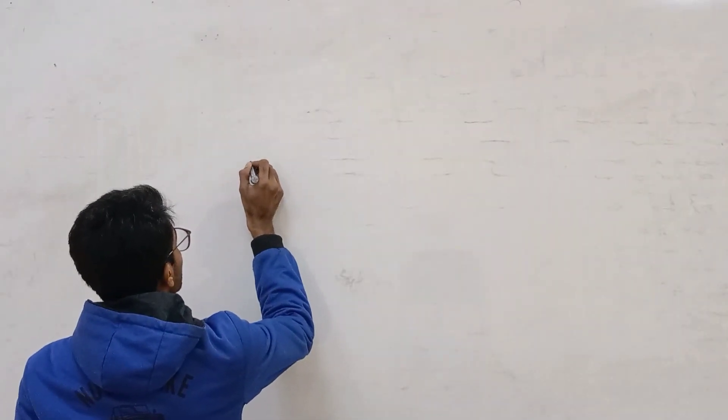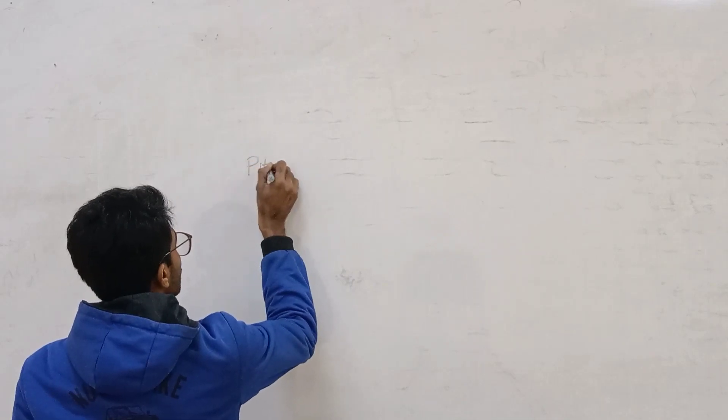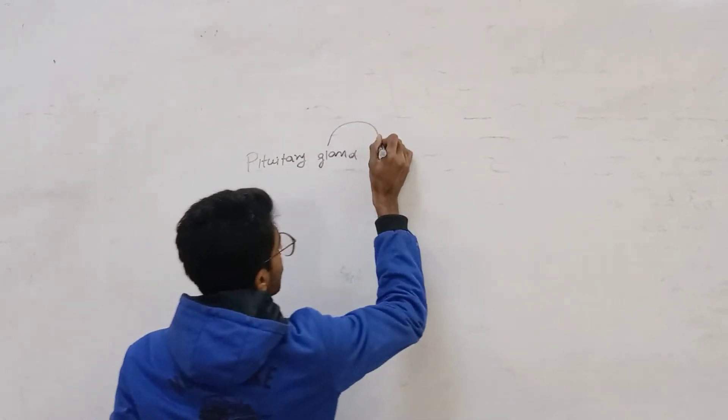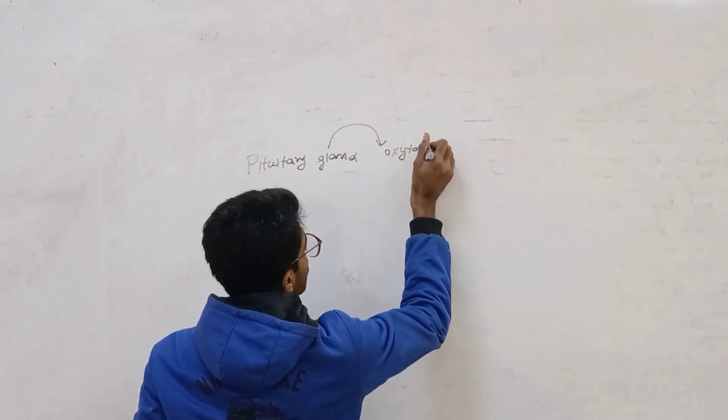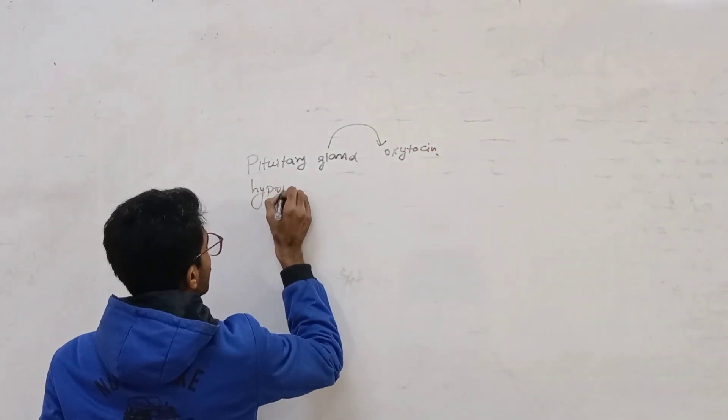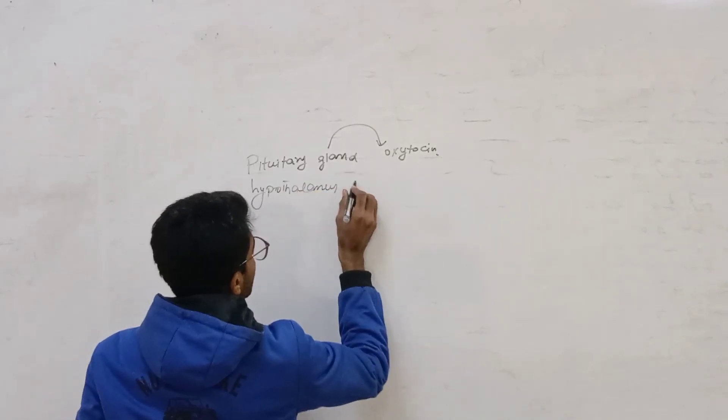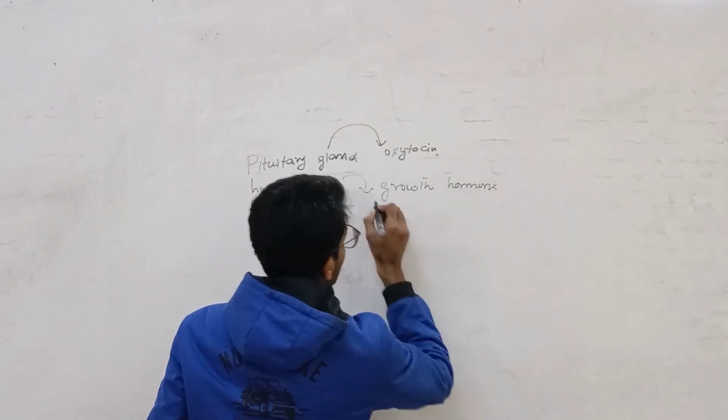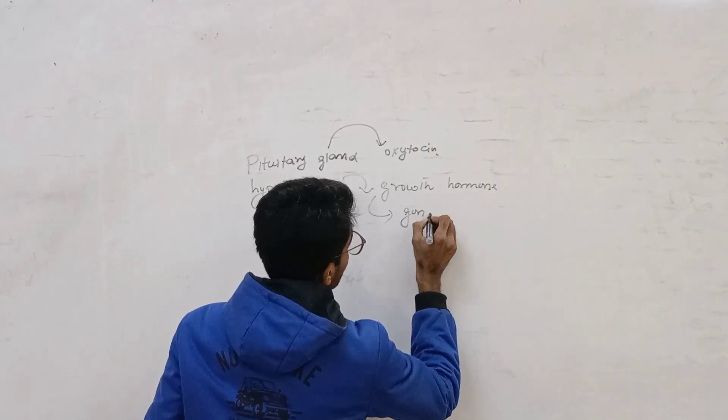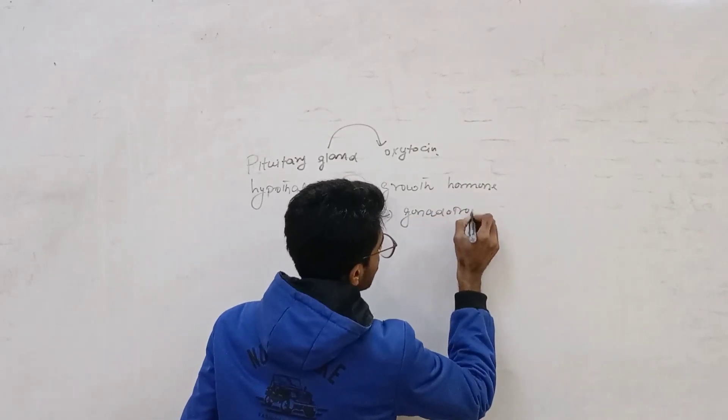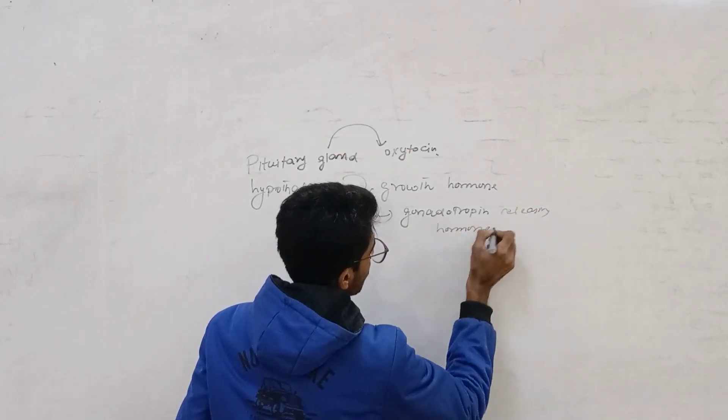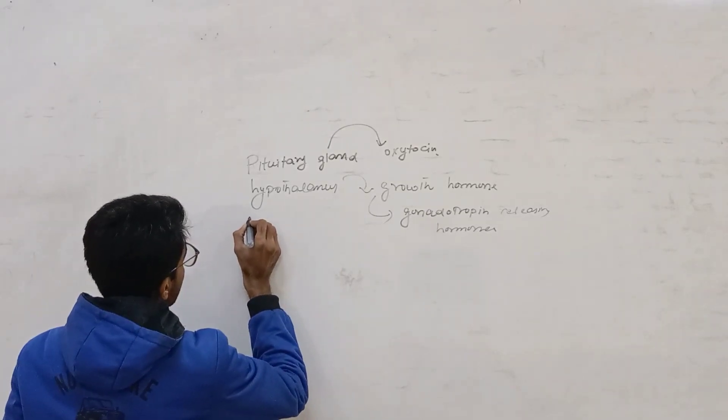One is the pituitary gland. They secrete hormones like oxytocin. The hypothalamus secretes growth hormone and, for example, gonadotropin-releasing hormone.